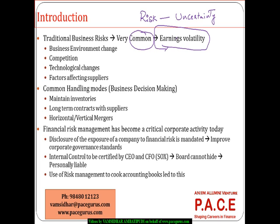The business environment keeps changing every now and then. Competitive forces keep changing — new competitors get in, existing ones move out. The technology keeps changing. Some new firms suddenly come out of the blue, whereas some firms completely lose their existence. There are lots of factors that impact and affect the suppliers. All these things are traditionally inevitable in any business.